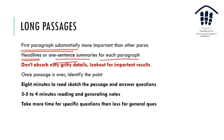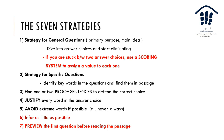For the strategy on general questions — primary purpose or main idea — dive into answer choices and start eliminating. If you're stuck between two choices, use a scoring system to assign value to each one. Personally, I check what each answer choice says for primary purpose, see how they differ from each other, and then compare with the passage to determine which is closer.